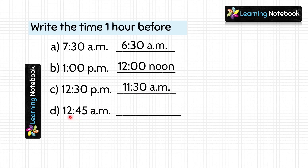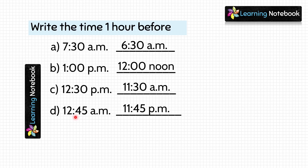Next part is 12.45 AM. 1 hour before 12.45 will be 11.45. This time is after midnight — 12.45 AM denotes after midnight. So 1 hour before will be in PM. Time will be 11.45 PM.